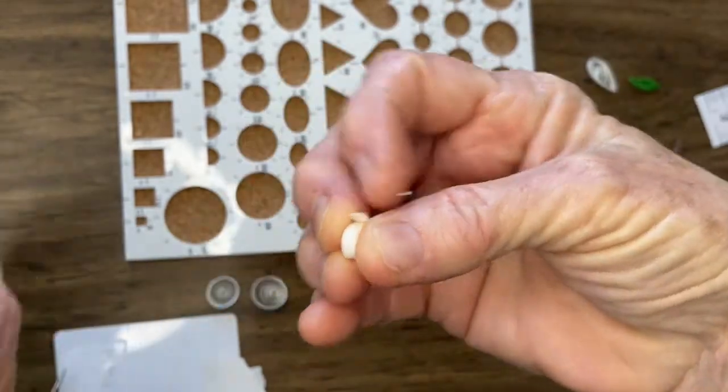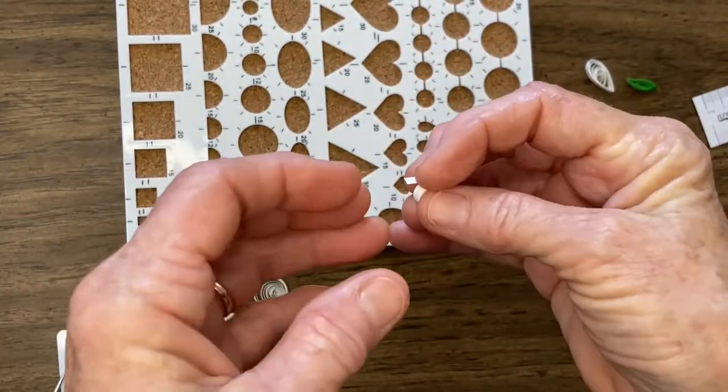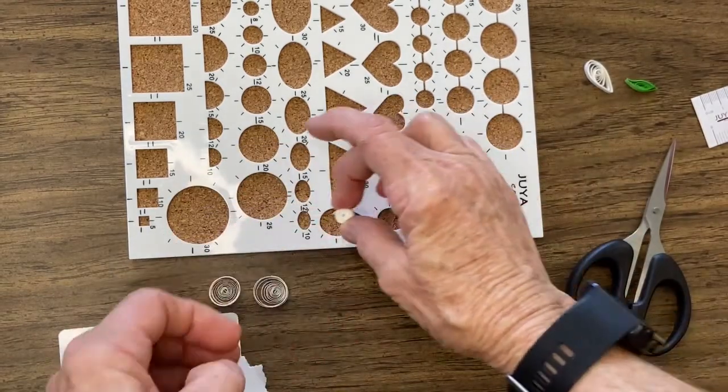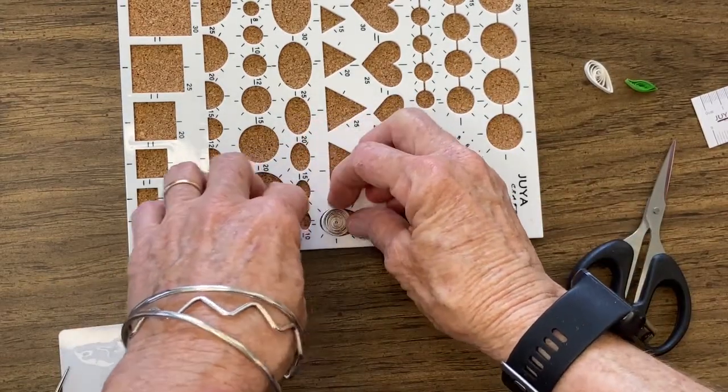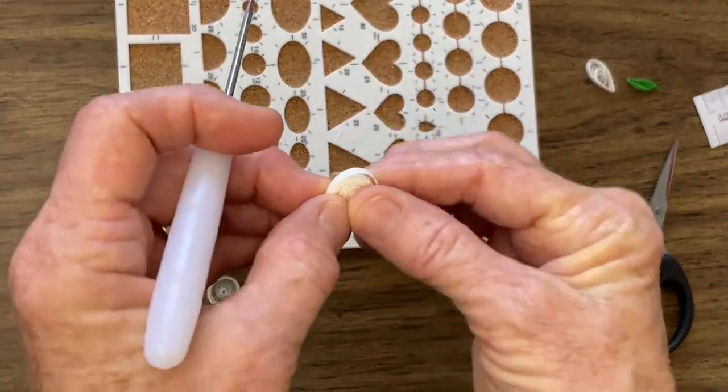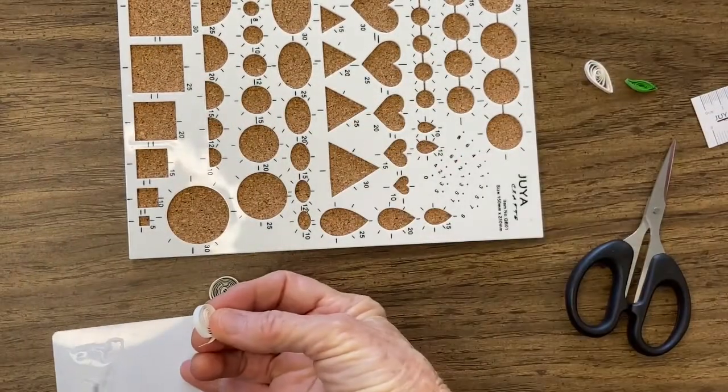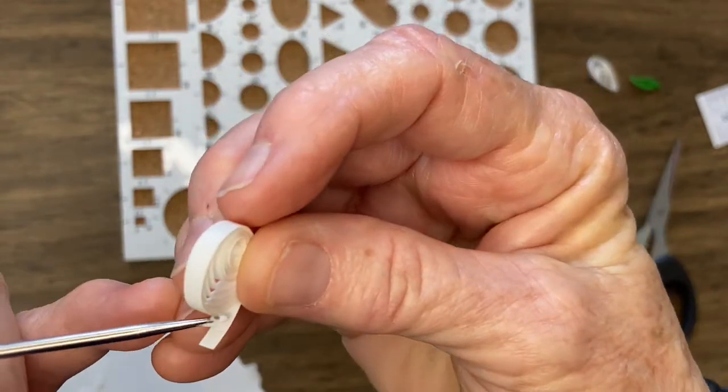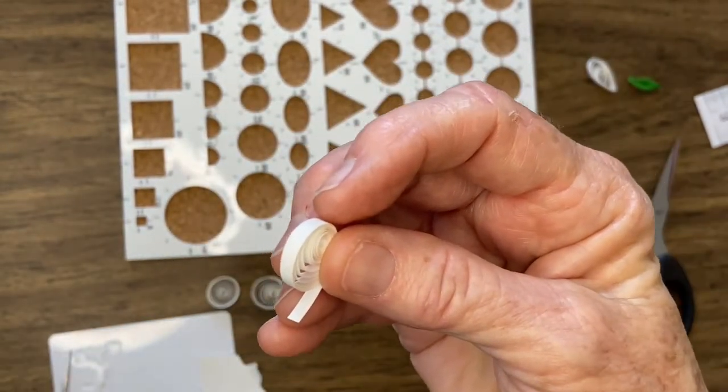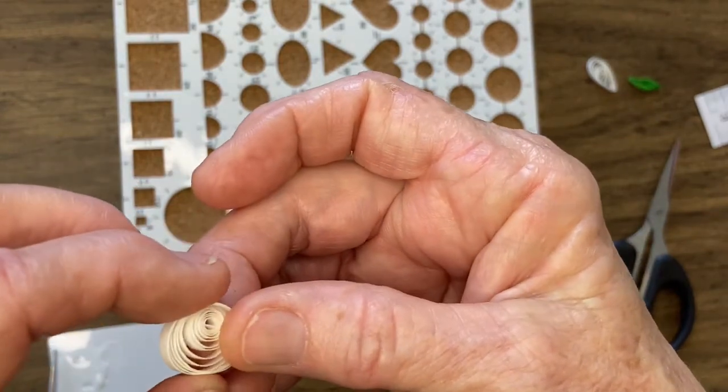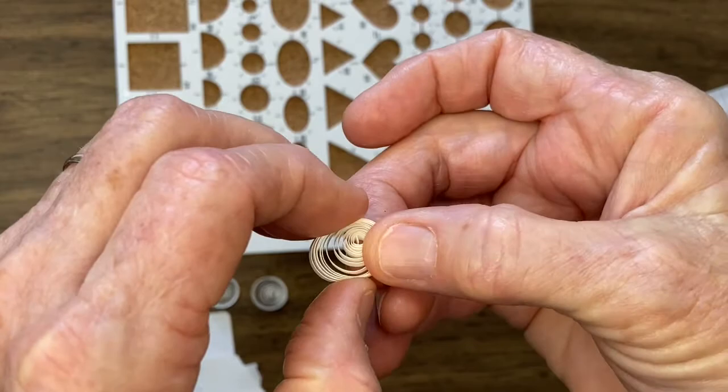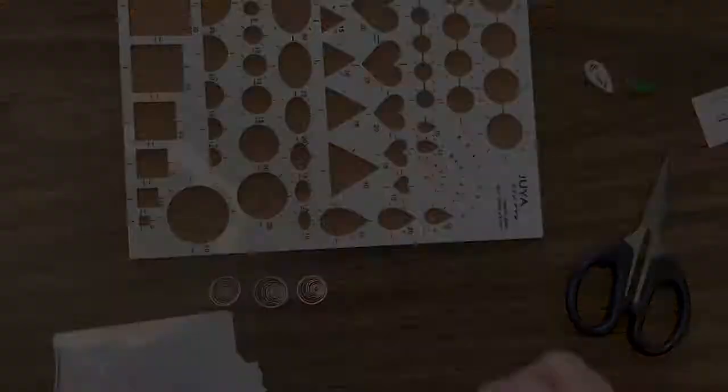I'm going to insert that into the design on the quilling project board. Kind of let it ease itself out. Then we'll add a little glue to the edge of that paper. It's kind of important not to use a lot of glue. You want to keep it neat as you can. Just kind of gently squeeze that together.